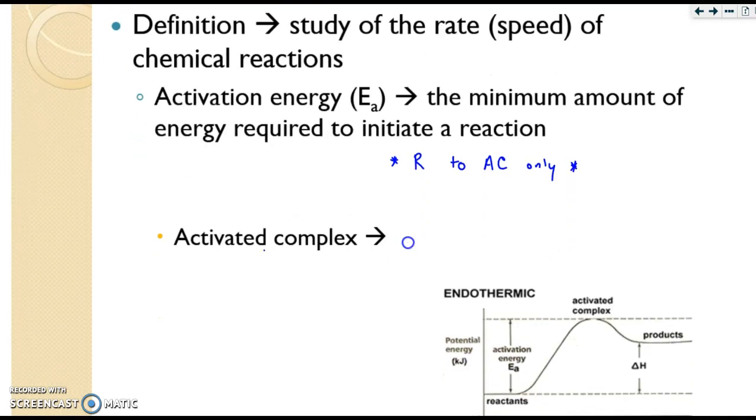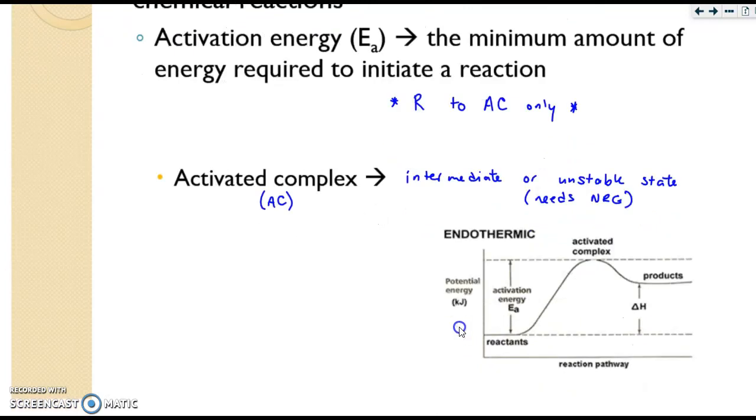this is from the reactants to the activated complex only. The activated complex, which I abbreviated AC up there, is an intermediate or an unstable state that exists before the reactant turns into a product. It requires energy. So let's look at this diagram, and we'll cover these diagrams in more detail on the next slide.